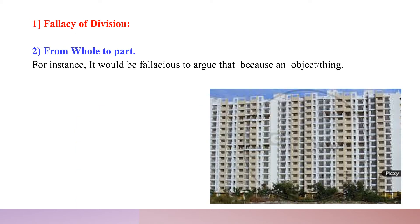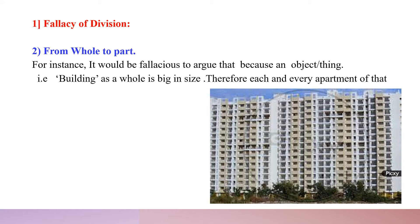The second way the fallacy of division is committed is from whole to part. For instance, it would be fallacious to argue that because a building as a whole is big in size, therefore each and every apartment of that building is also big in size. What is true of the whole building need not be true of each apartment, because the size of the building depends on the number of flats as well. The building may have many flats and therefore be big, but the individual flats may be small.